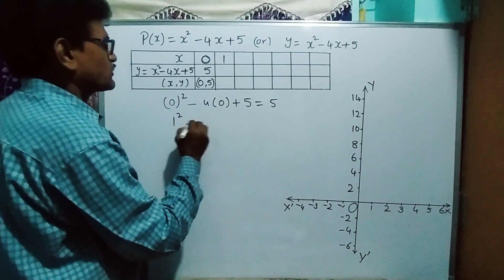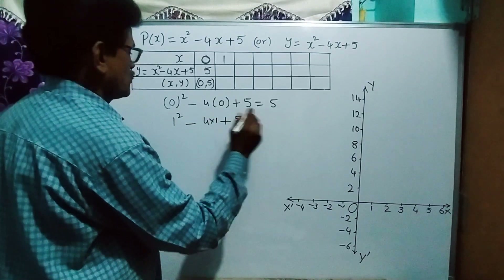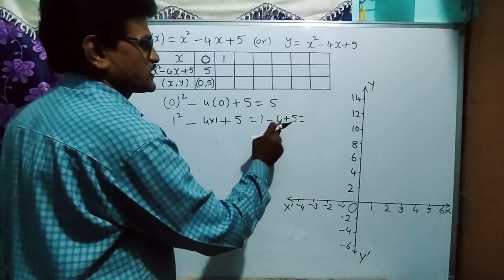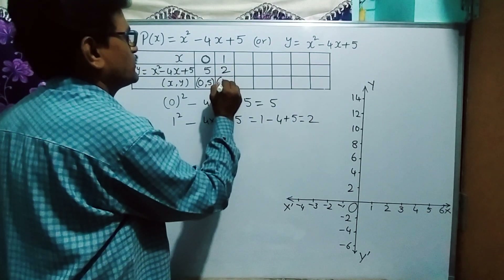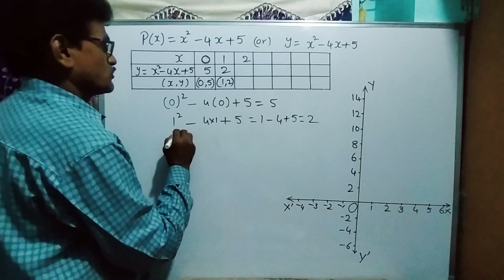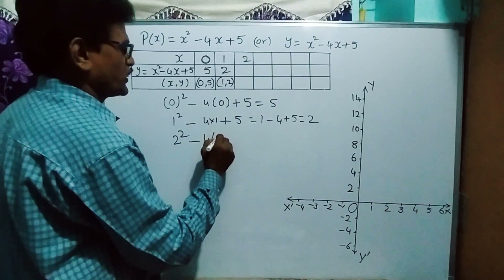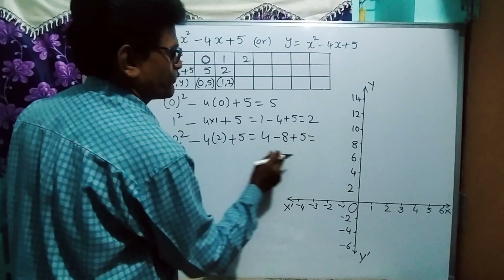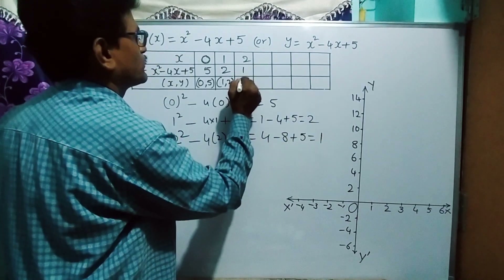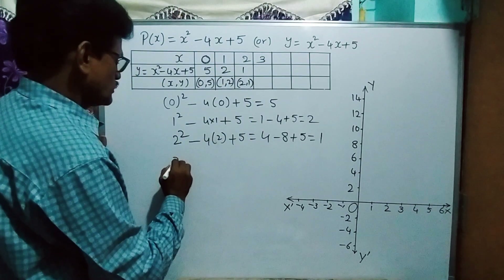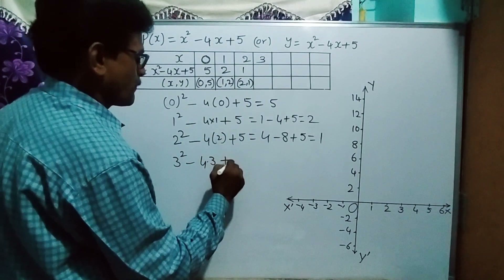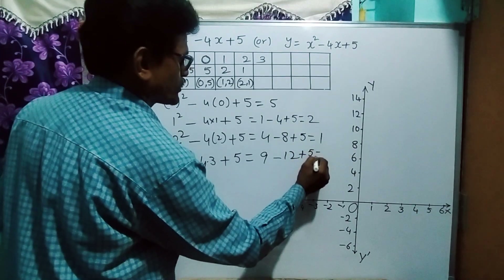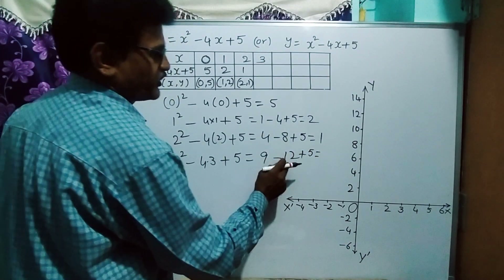Substituting x = 0: 0² - 4(0) + 5 = 5. So the pair is (0, 5). For x = 1: 1² - 4(1) + 5 = 1 - 4 + 5 = 2. Pair: (1, 2). For x = 2: 2² - 4(2) + 5 = 4 - 8 + 5 = 1. Pair: (2, 1). For x = 3: 3² - 4(3) + 5 = 9 - 12 + 5 = 2. Pair: (3, 2).